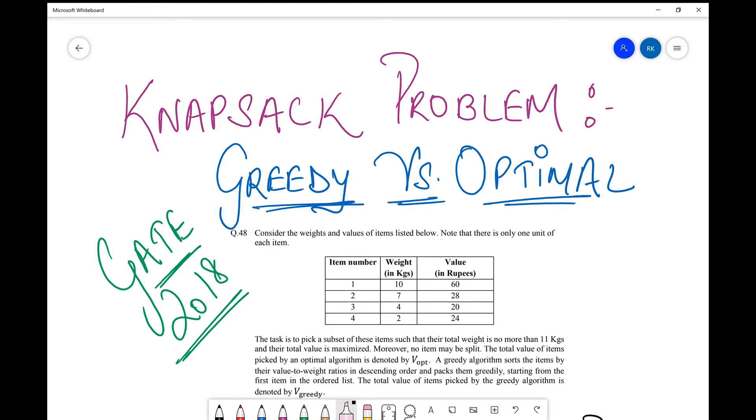So let's quickly go through the question, what the question says, and what do we need to do to solve the question. So they say that consider the weights and values of items listed below. So they have these weights, these values of four items that they have written over here.